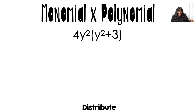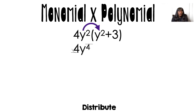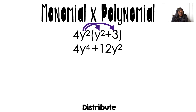At this point of the video, I want you to try on your own — remember I told you to take out a sheet of paper? You should pause the video and try this one. It's just a monomial times a binomial. So 4y squared times y squared gives you 4y to the fourth, and then 4y squared times 3 gives me 12y squared. Monomials are easy — try the next one on your own and pause the video.